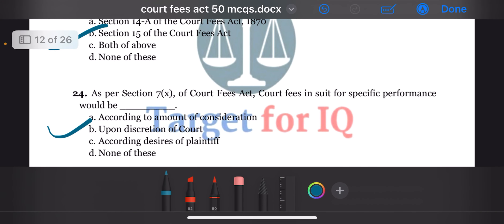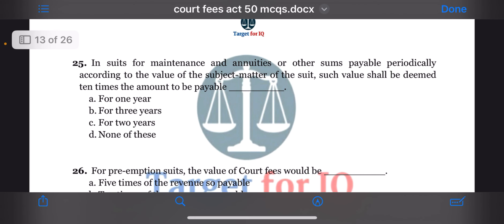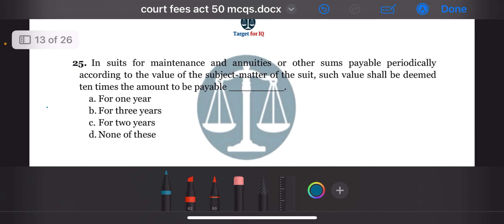Next question: in suits for maintenance and annuities or other sums payable periodically, according to the value of the subject matter of the suit, such value shall be deemed 10 times the amount to be payable dash. The options are A. For 1 year, B. For 3 years, C. For 2 years, or D. None of these. The correct answer is option A. For 1 year.